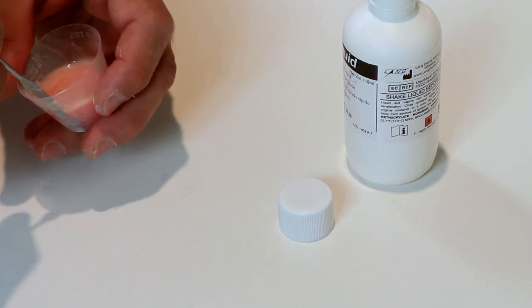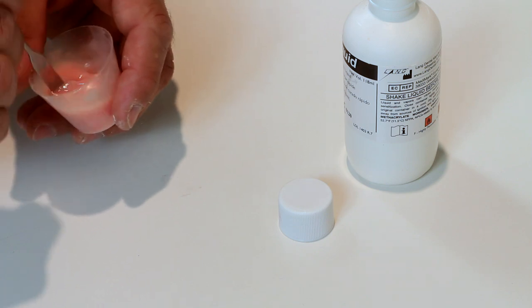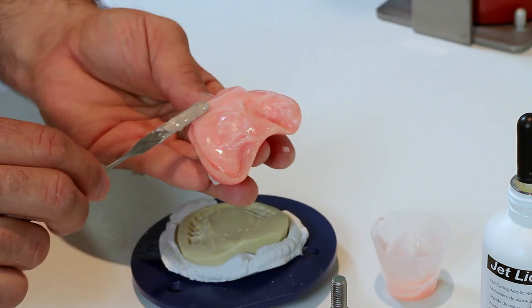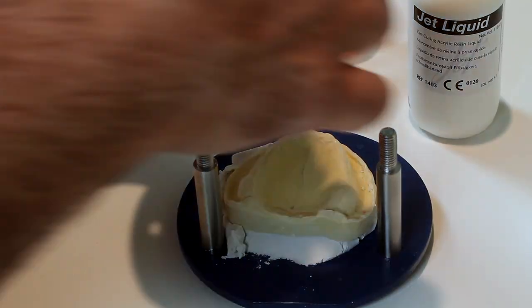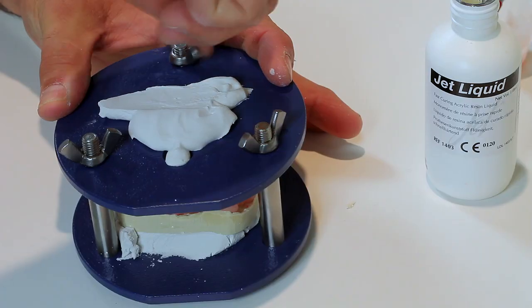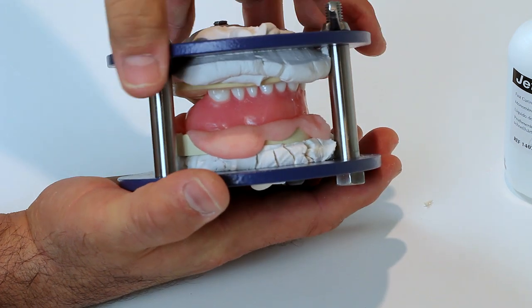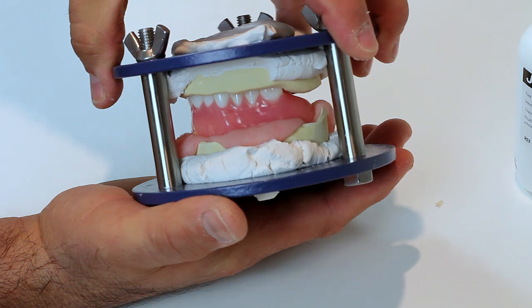Mix Lange's Jet Denture Repair Acrylic. Per jet acrylic instructions on set time, place the mixed repair acrylic into the denture throughout the arch form. Then, place the upper member of the jig and refasten the wing nuts all the way down. Be certain that flash appears all the way around the denture to cover all areas.